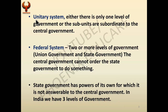There are two systems of government: the unitary system and the federal system. In the unitary system, either there is only one level of government, or the subunits are subordinate to the central government. In China, for example, the entire country has only one government — the central government. In other cases, state governments exist but are subordinate to the central government, meaning they do not have equal status. Whenever the central government thinks the state government is not working properly, it can dismiss that state government.